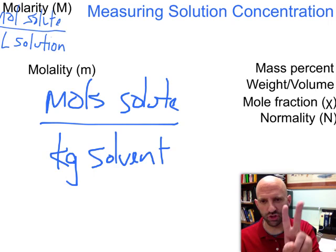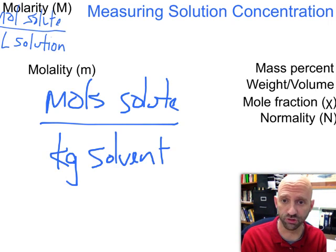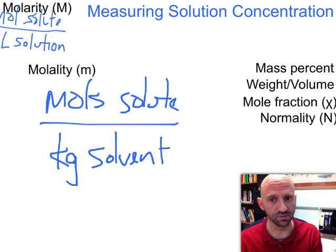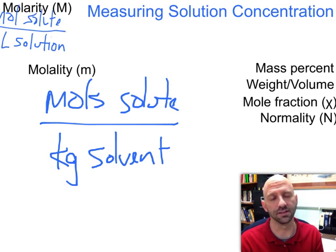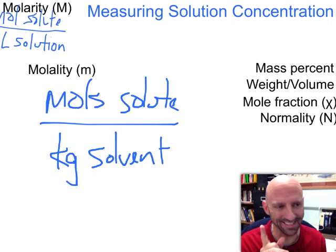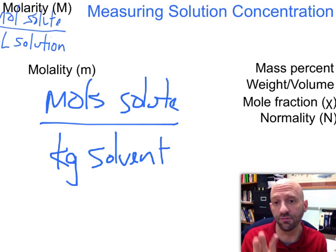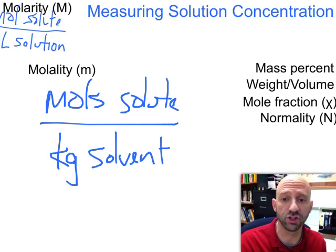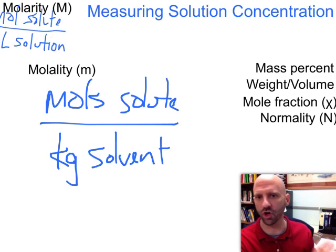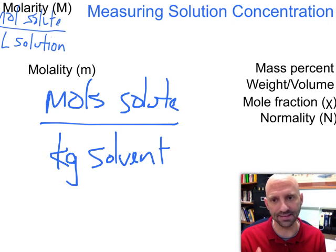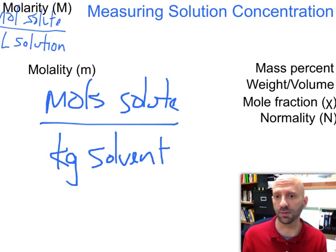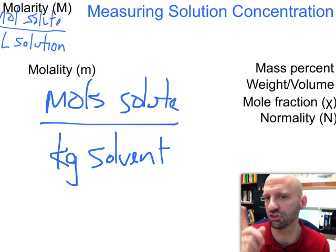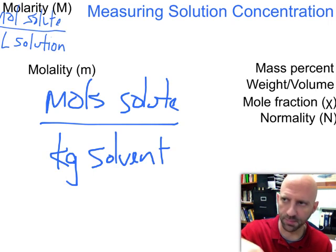So there are two changes here in the denominator. We've gone from a volume, liters in molarity, to a mass, kilograms. And in molarity it was the liters of the whole solution, and here in molality it's just the kilograms of only the solvent. There's a reason why we've made these changes, and each of these different composition types has an application later on in the unit.